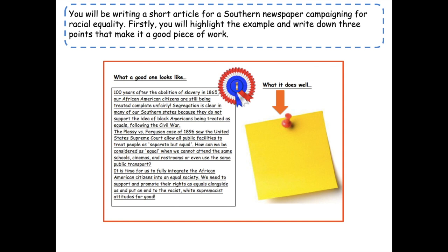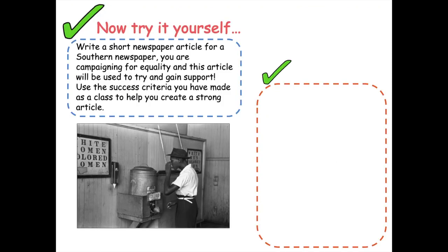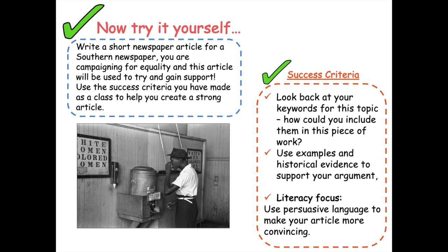Last activity: you will be writing a short article for a southern newspaper campaigning for racial equality. First, look at the example below and make a note of three points that make it a good piece of work — you can write those down on your worksheet. Once you've done that, try it yourself: write a short newspaper article for a southern newspaper, campaigning for equality. This article will be used to try and gain support. Use the success criteria to help you create a strong article — have a read of this and try to apply it.